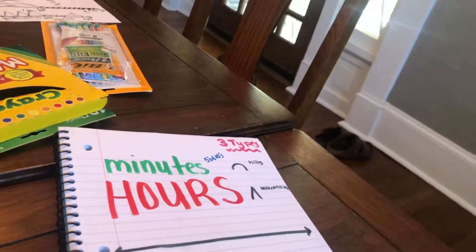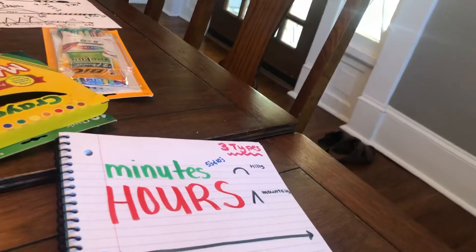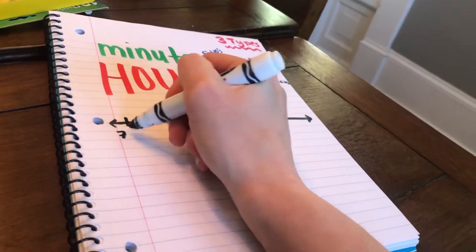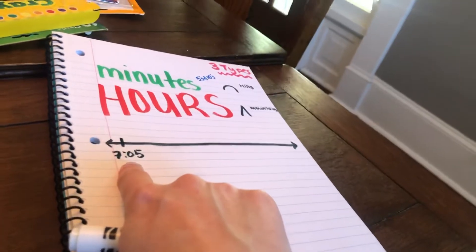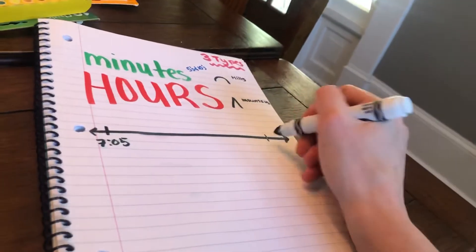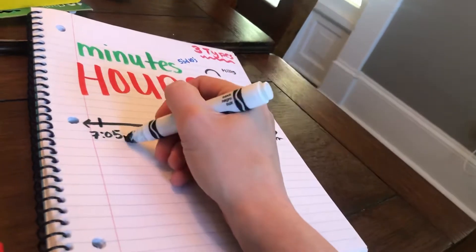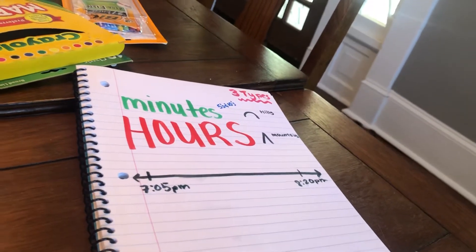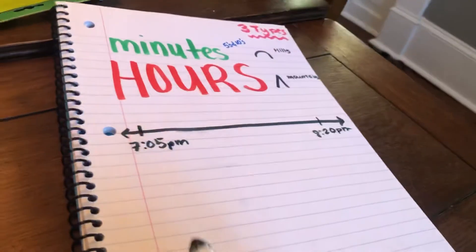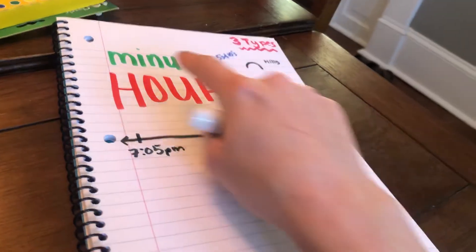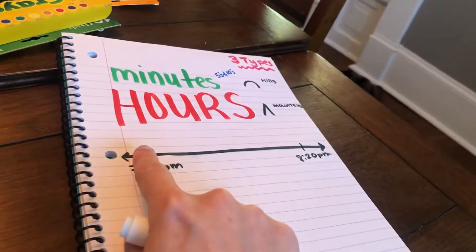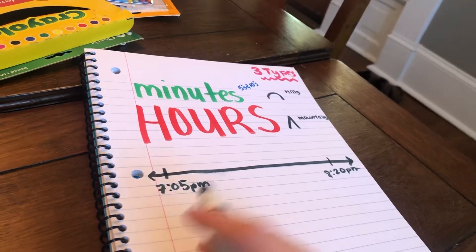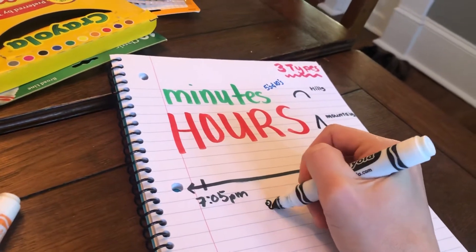My first word problem was about a concert. I was told the concert started at 7:05 p.m. — so I know my start time, my first number on my number line. It told me it ended at 8:20 p.m. And it asked: how long did the concert last? The first thing I'm going to think about is, to go from 7:05 to 8:20, what's the biggest jump I can make? Can I jump in hours — my mountains? 7:05 plus one hour would be 8:05.